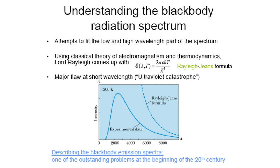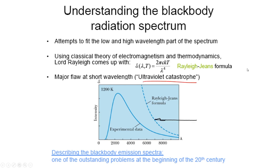There was also the Rayleigh-Jeans formula, in which intensity goes as 1/λ⁴. This formula is valid for larger wavelengths but does not explain the non-monotonicity — the going up and coming down. This remained an outstanding problem at the beginning of the 20th century. The major flaw at short wavelengths is known as the ultraviolet catastrophe, and it had to be resolved.